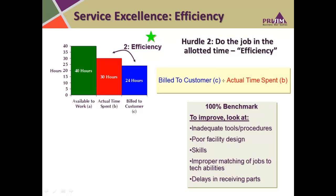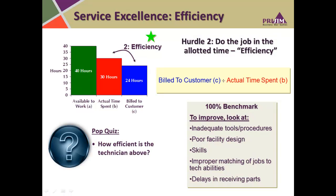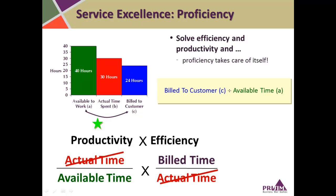The efficiency metric shows whether service techs are completing jobs in the allotted time. It's calculated as time billed to customers divided by actual time spent, with a benchmark of 100%. In our example, the technician is working at an 80% efficiency level. Overall, proficiency is calculated as time billed to the customer divided by available time. Because proficiency is the product of productivity times efficiency, if you take care of both of those, proficiency takes care of itself. In our example, the technician is at a 60% proficiency level.